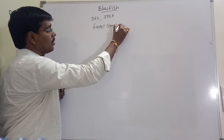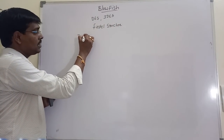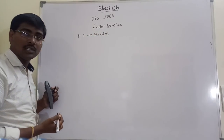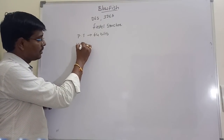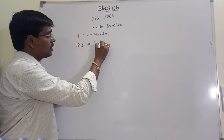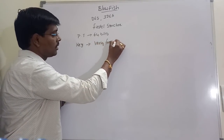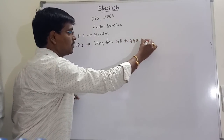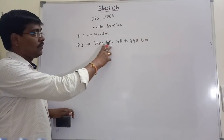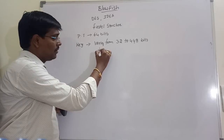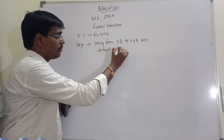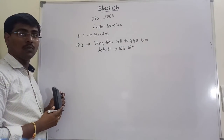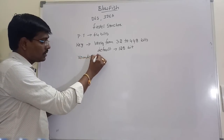In Blowfish, the size of the plain text is 64 bits. The key size varies from 32 to 448 bits — that is, the key size is not fixed. By default, if you are not mentioning anything, the size of the key is 128 bits.